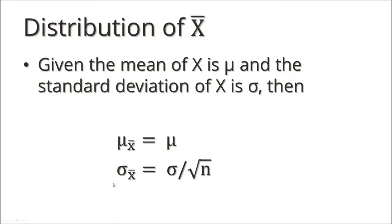Two: the standard deviation of x-bar is equal to the standard deviation of x divided by the square root of n. This is interesting because as the sample size increases, the square root of n also increases, which means that sigma divided by the square root of n goes to zero. Which means that as the sample size increases, our estimate of mu is going to become more and more precise. So the distribution of x-bar has mean mu and standard deviation sigma over the square root of n.